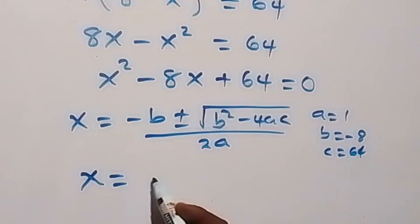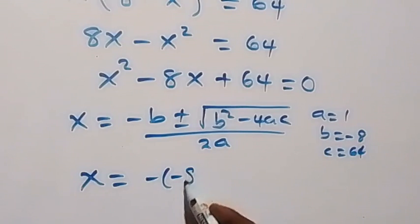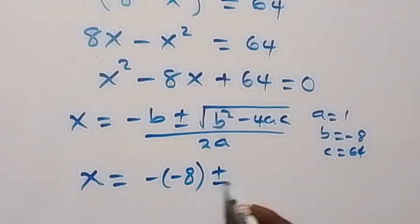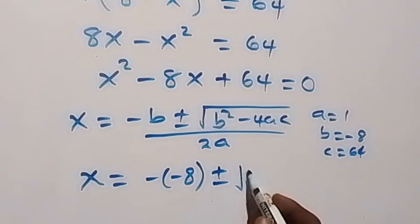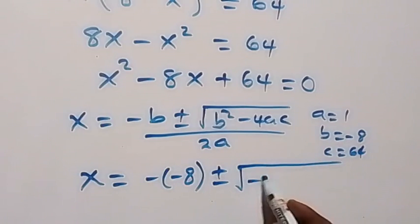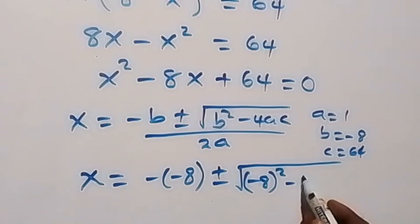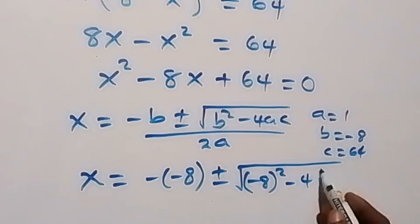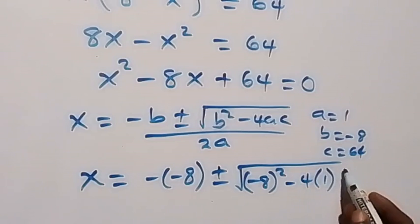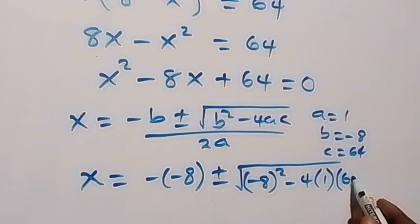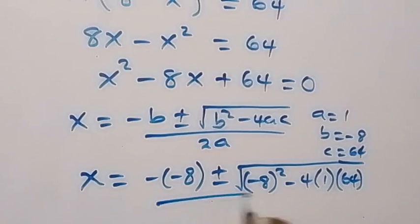So we have x equals to negative negative 8, plus or minus square root of negative 8 squared minus 4 times 1 times 64, all over 2 times 1.